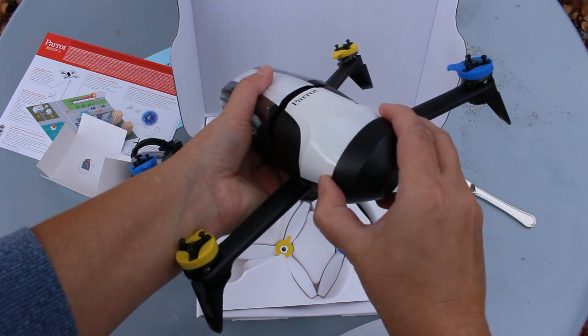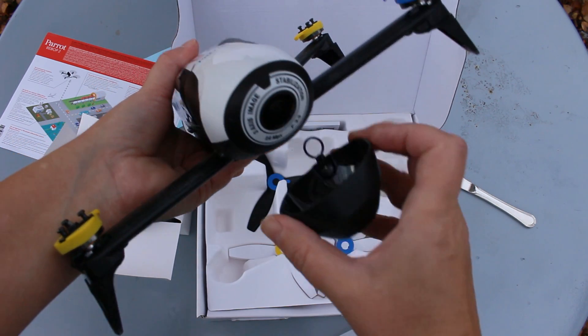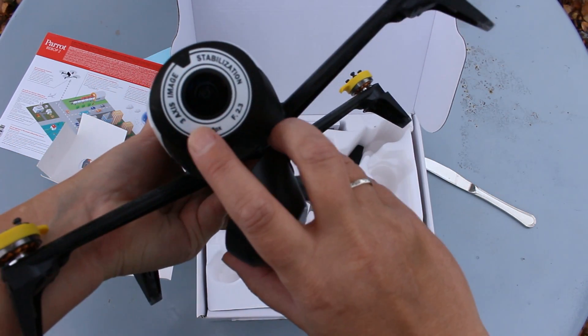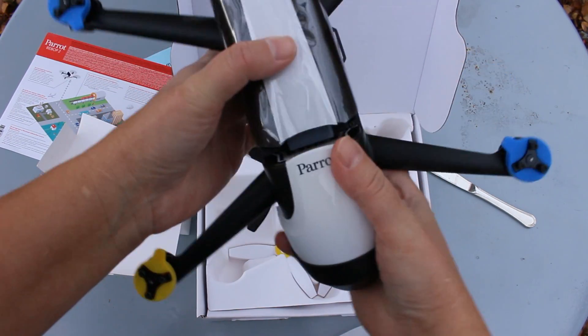There you go. That camera out front. Image stabilization. 14 megapixels. Very nice. So I'll keep the thing on so I don't drop it. Nicely color coded.